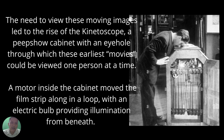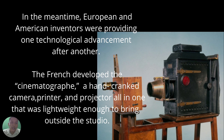By looking at the history, to view a certain image you needed to use a kinetoscope — a peep show cabinet with an eyehole through which the earliest movies could be viewed, one person at a time. A motor inside the cabinet moved the film strip in a loop, with an electric bulb providing illumination from beneath.